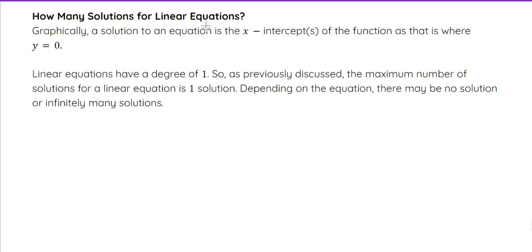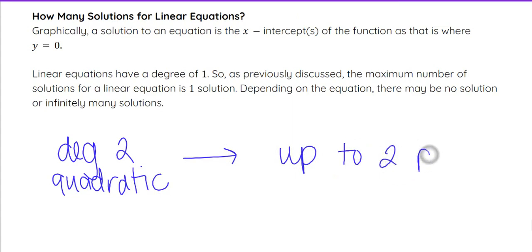As a reminder, we've talked about how do we know how many solutions an equation has, and that does transfer over to linear functions. We talked about, for example, if we had a degree of 2—remember, that is a quadratic. In a quadratic, having a degree of 2 means up to two possible solutions. Could have 1, could have 2, could have none.